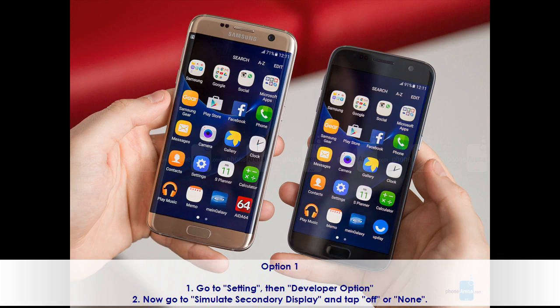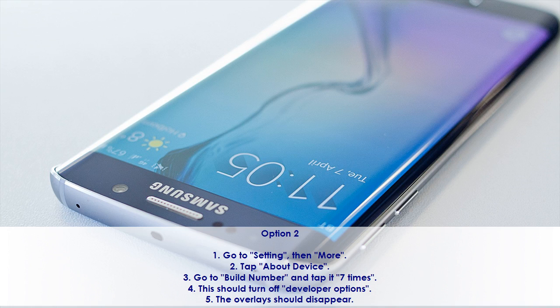Option 2. Go to Settings, then More. Tap About Device. Go to Build Number and tap it 7 times. This should turn off developer options. The overlays should disappear.